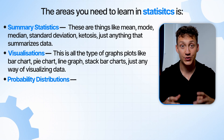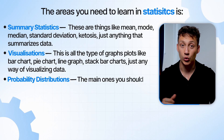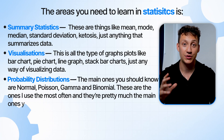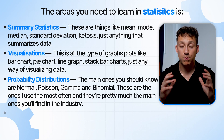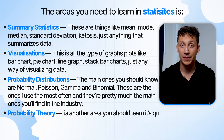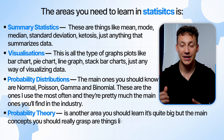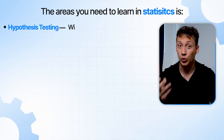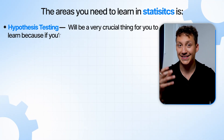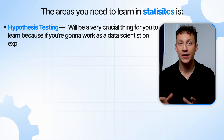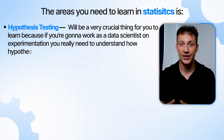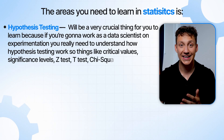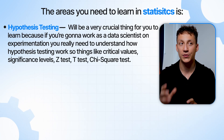You should also be familiar with probability distributions. The main ones you should know are normal, Poisson, gamma and binomial — these are the ones used most often in the industry. Probability theory is another area to learn; the main concepts you should really grasp are maximum likelihood estimation and the central limit theorem. Hypothesis testing will be very crucial, especially if you're going to work on experimentation. Things like critical values, significance levels, z-test, t-test, chi-square test — the whole framework around how hypothesis testing works.